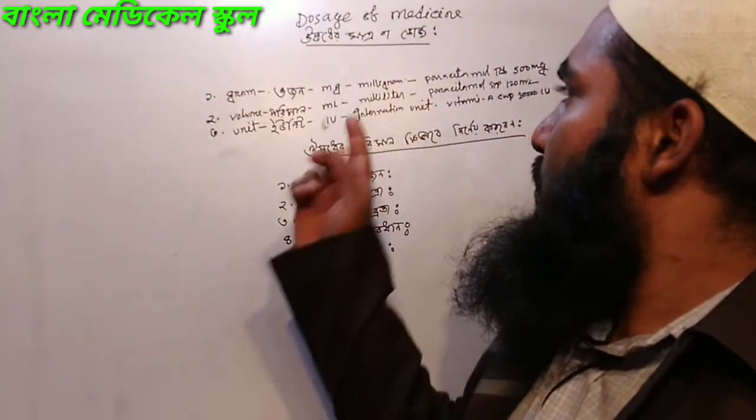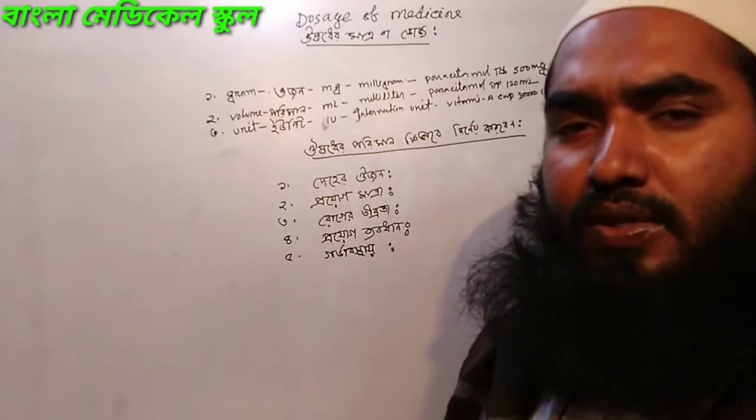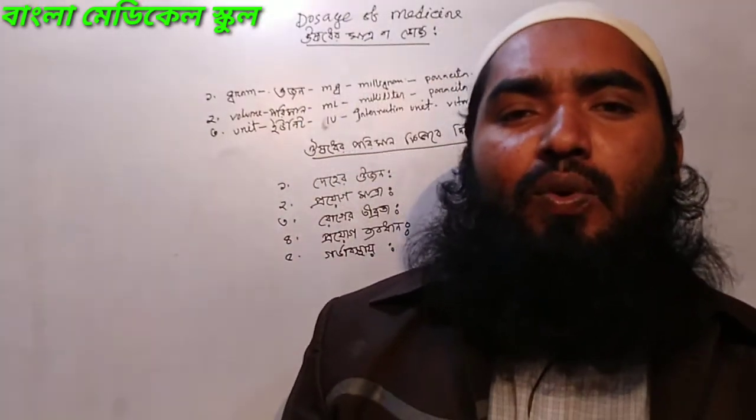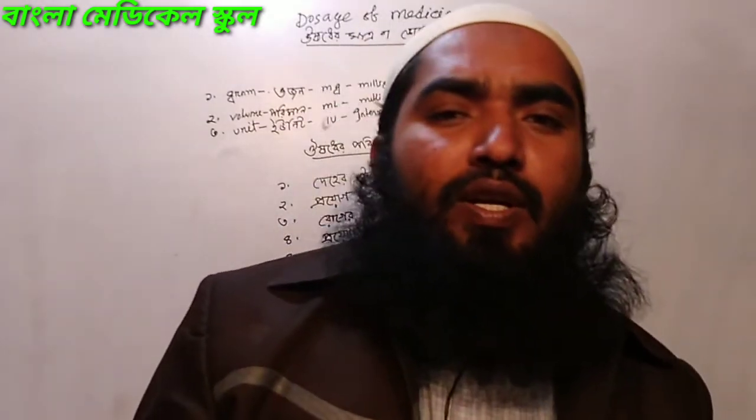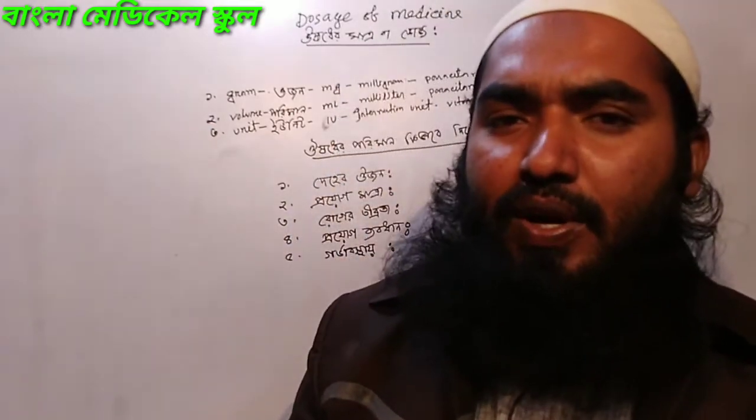Dose of medicine — oshudder maatra, meaning the dose. What do we mean by oshudder maatra (dose)? The dose refers to the amount, situation, and how long a medicine is given — how many days, how many times. If it is a tablet, the dose is one way; if it is a capsule, another way; and if it is an injection, the dose amount may be comparatively less. So the dose of medicine is very important to understand.